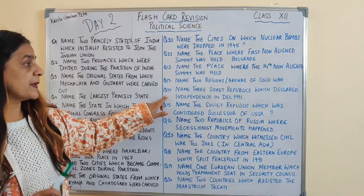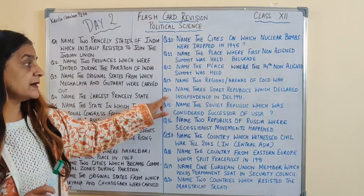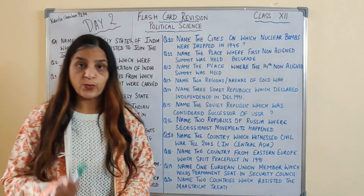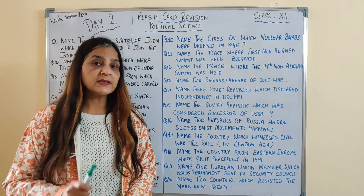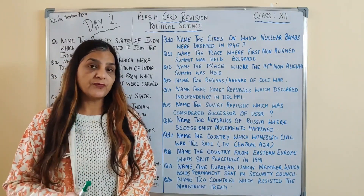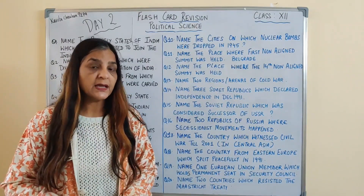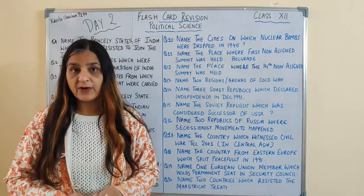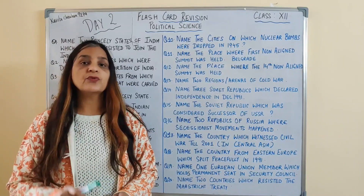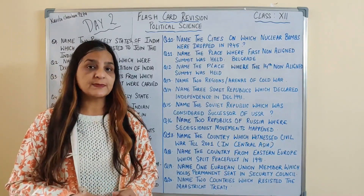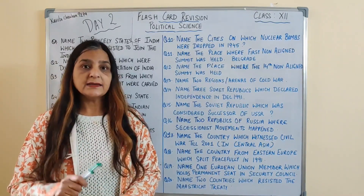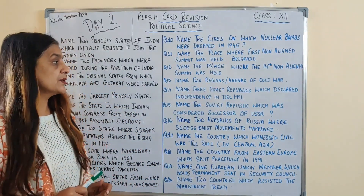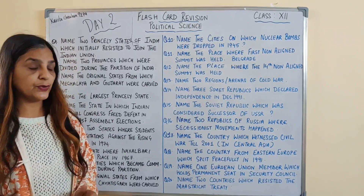Question number 14: name three Soviet republics which declared independence in December 1991. Kaunse teen Soviet republics the jinhone announce kiya 1991 mein that Soviet Union was disbanded, and the answer is Russia, Belarus, and Ukraine.